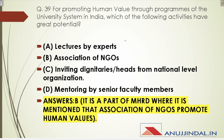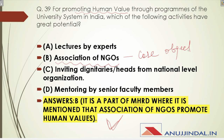Question 39 asks: for promoting human values through programs of the university system in India, which of the following activities have great potential? The answer is association of NGOs. It is mentioned in MHRD that association of NGOs promotes human values, and the reason is that promoting human values is a core objective of NGOs. So it is very important to study MHRD for your exam.